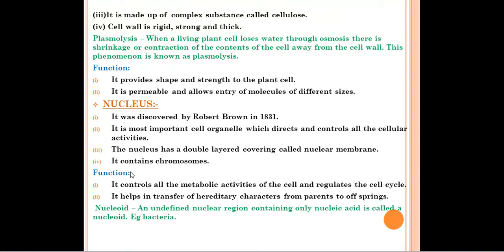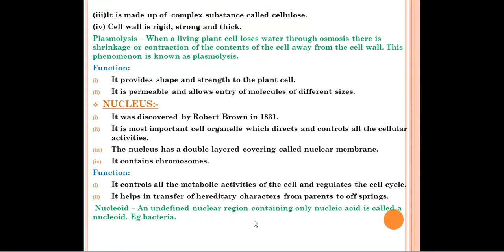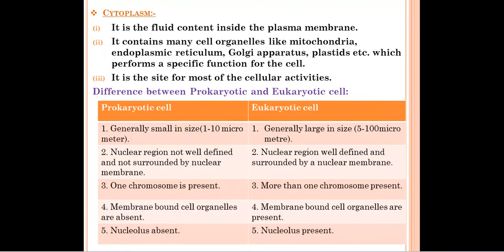The functions of the nucleus: it controls all the metabolic activities of the cell and regulates the cell cycle. It helps in the transfer of hereditary characters from parents to offspring, since chromosomes — the hereditary material DNA — are present inside the nucleus. One term is nucleoid: an undefined nuclear region that contains only nucleic acid. Nucleoid is generally present in bacteria.